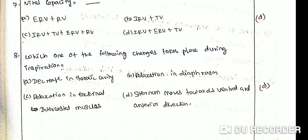Which of the following changes takes place during inspiration? Option A: Decrease in the thoracic cavity. Option B: Relaxation in diaphragm. Option C: Relaxation in external intercostal muscles. Option D: Sternum moves towards ventral and anterior direction. The correct answer is Option D. During inspiration, thoracic volume increases, sternum moves towards ventral and anterior direction, diaphragm contracts, and ribs move towards outside and ventral side.